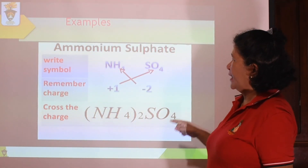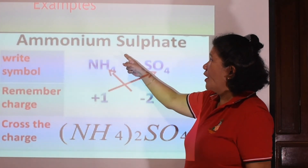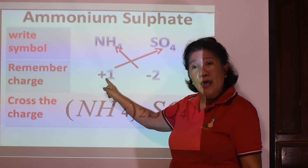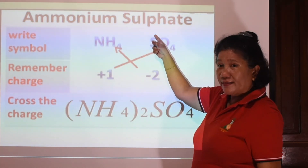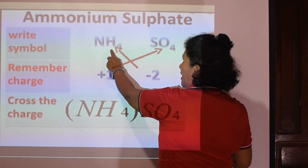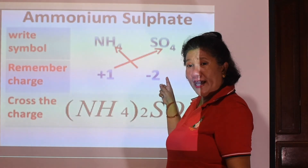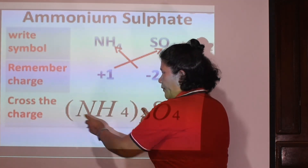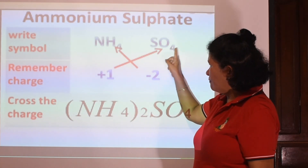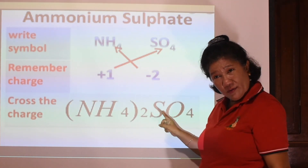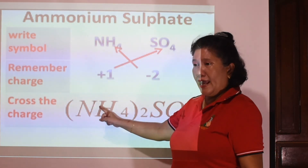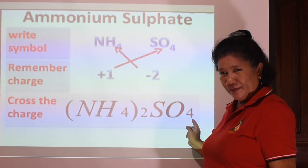Another example is ammonium sulfate. Ammonium is the only polyatomic ion that bears a positive charge — positive 1. Sulfate has a charge of negative 2. Using crisscross, ammonium will have 2 atoms and sulfate will have 1. Since ammonium is polyatomic and has more than 1, place it in parentheses. The final formula is (NH4)2SO4.